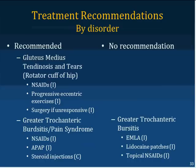For gluteus medius tendinosis and tears — the rotator cuff tears of the hip — all recommendations are consensus: anti-inflammatories, eccentric exercises, and surgery if unresponsive, though not generally needed. For trochanteric bursitis and greater trochanteric pain syndrome, steroid injections have a C recommendation; both NSAIDs and acetaminophen are recommended on a consensus basis. EMLA cream is not recommended; lidocaine patches and topical NSAIDs do not seem to work on a consensus basis. For groin strain and adductor pain, recommendations include self-applied ice and heat, ACE wraps on a consensus basis, reducing high-load activity, PT and OT, and NSAIDs. Bed rest is not recommended.